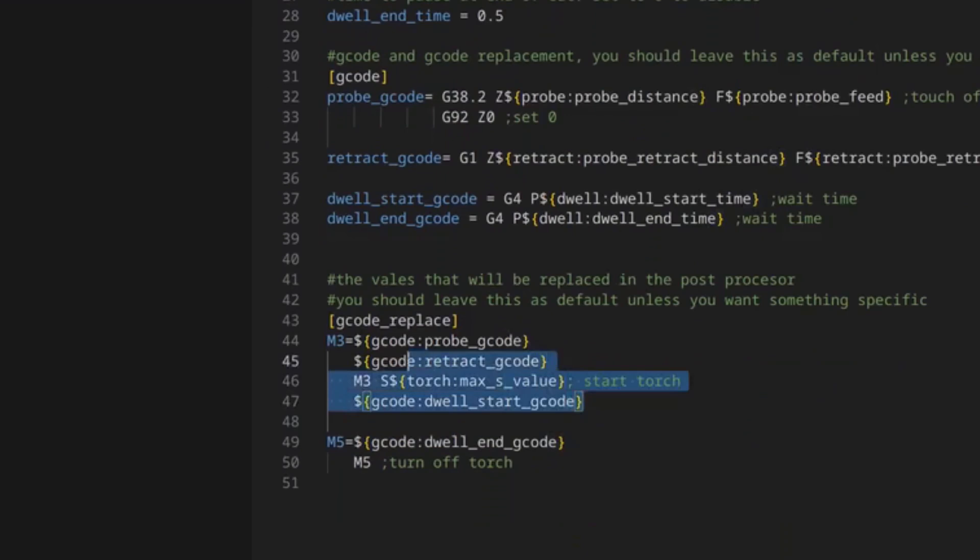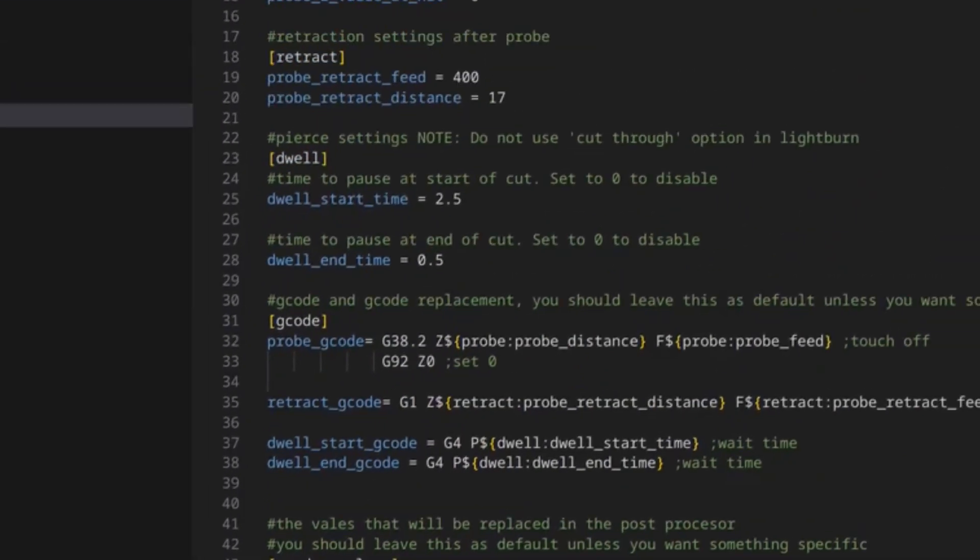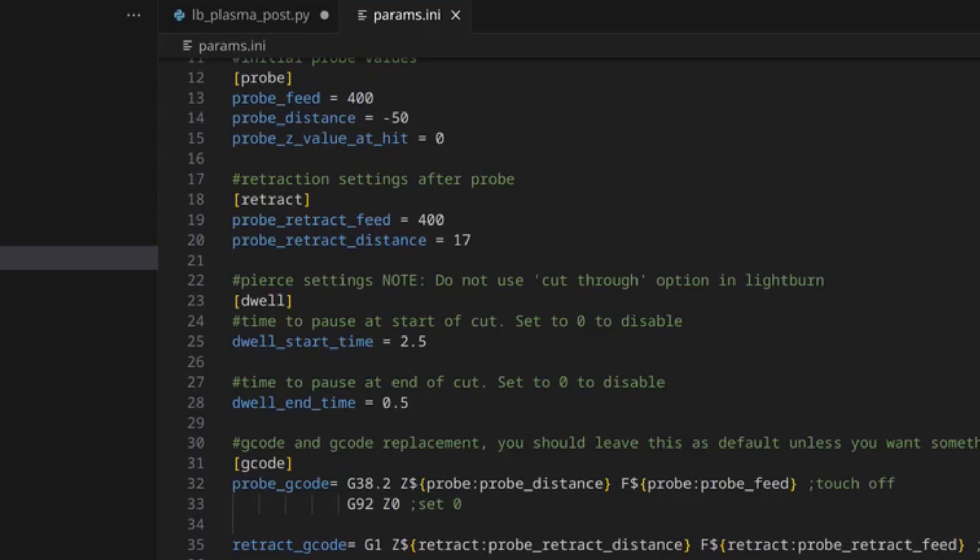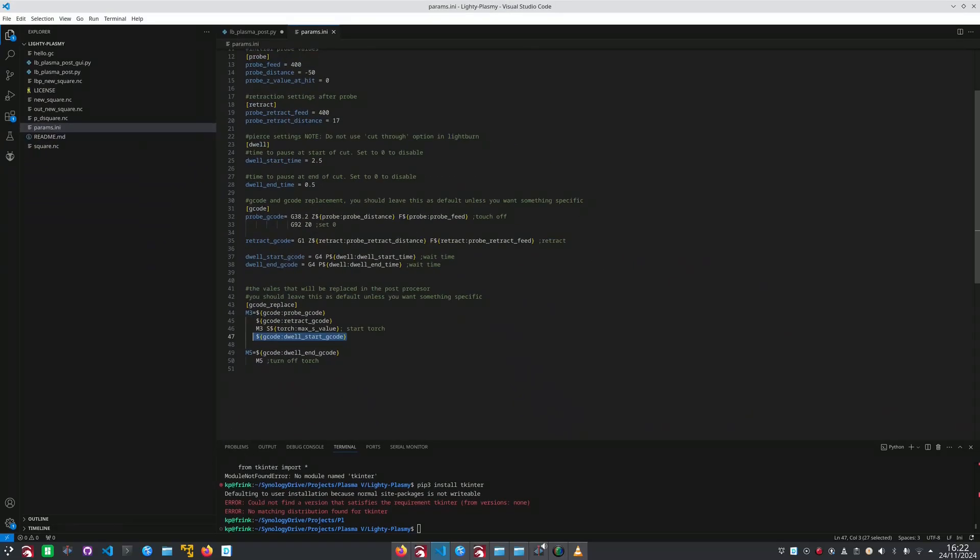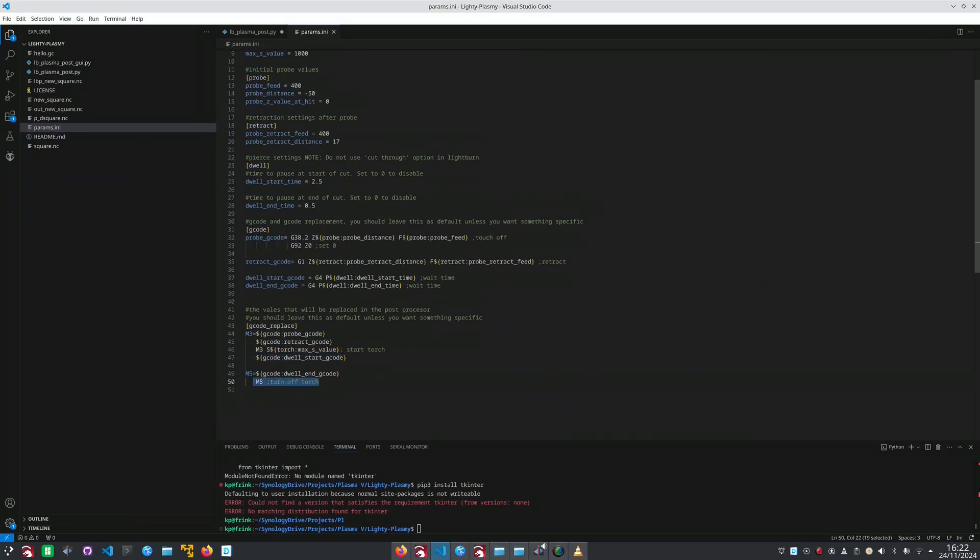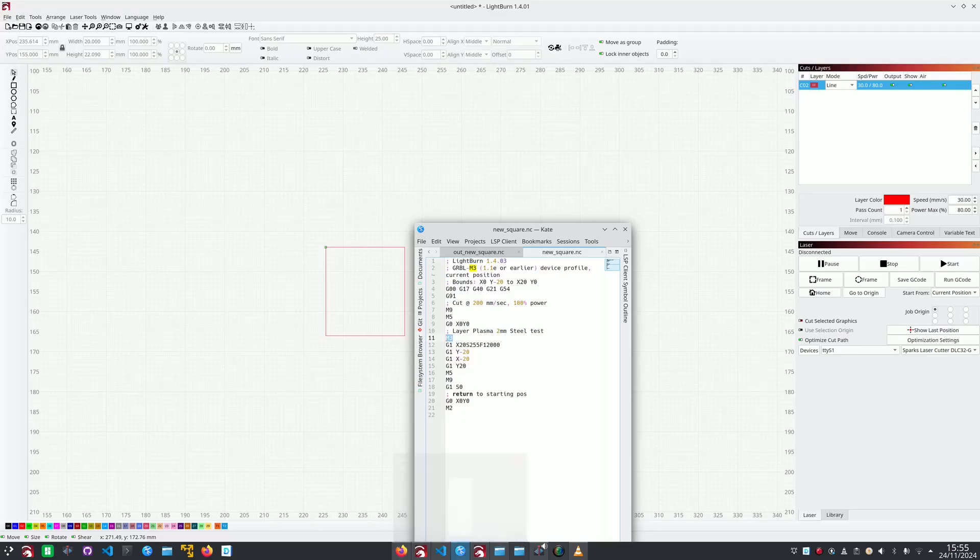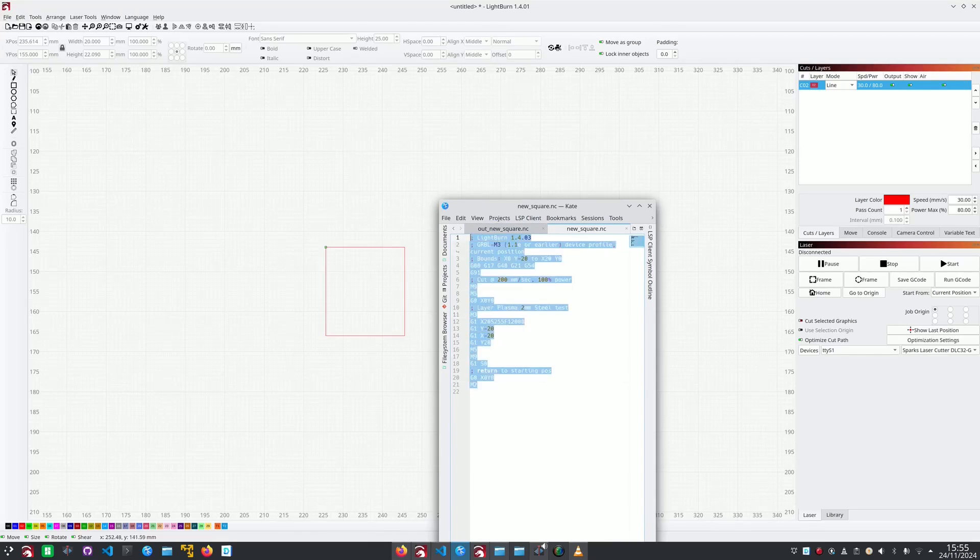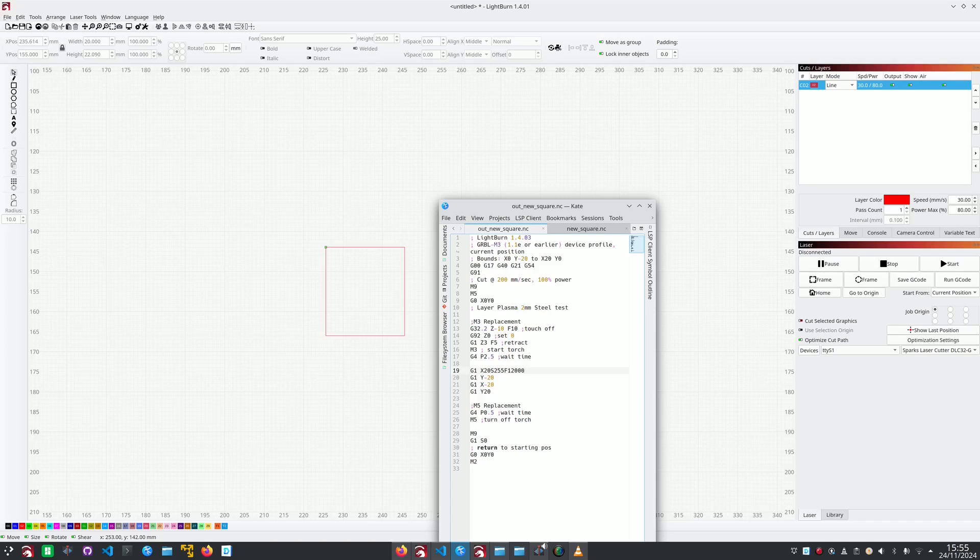The M3 command gets replaced with the following instructions, a probe, a retract, starting the torch, and then a dwell period. The dwell is useful for piercing through the materials before the cuts start. The M5 has a similar dwell period, but this is at the end of the cut. Going back to the example of the square, this would have been the regular G-code that was produced and running it through the script gave me the following G-code. And this was the part that solved the issue. So the M3 replacement changing the original G-code into the values that were included in that parameters file and also a dwell time at the end for that M5 command.